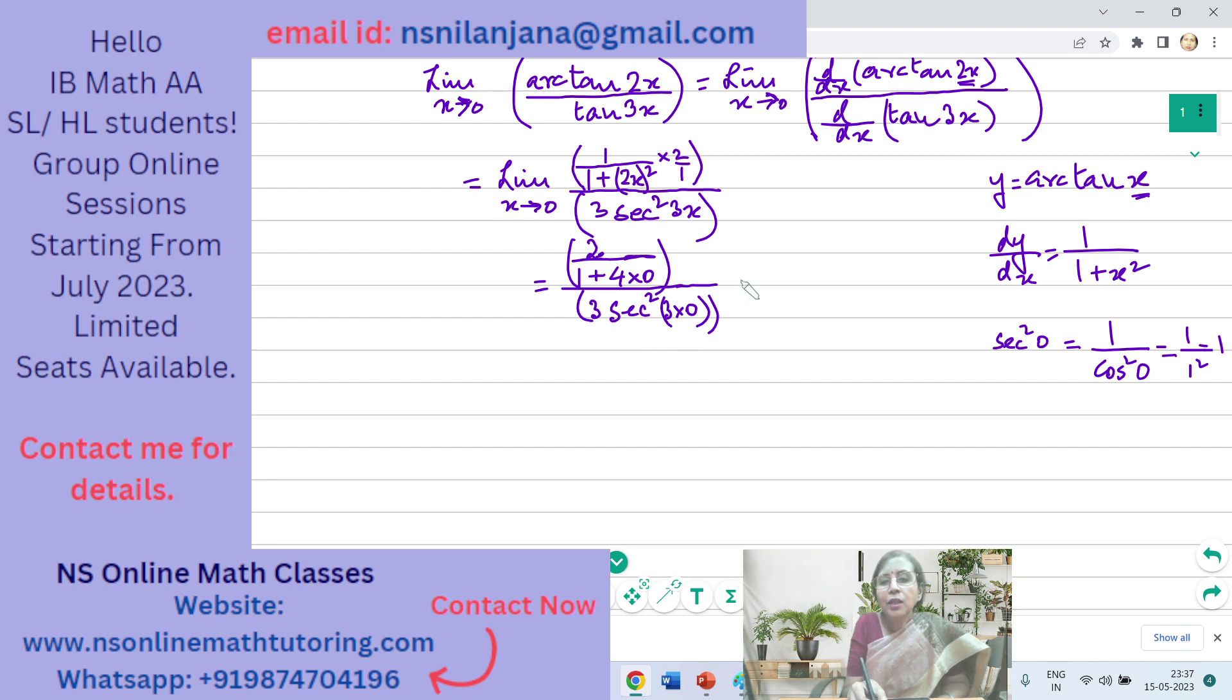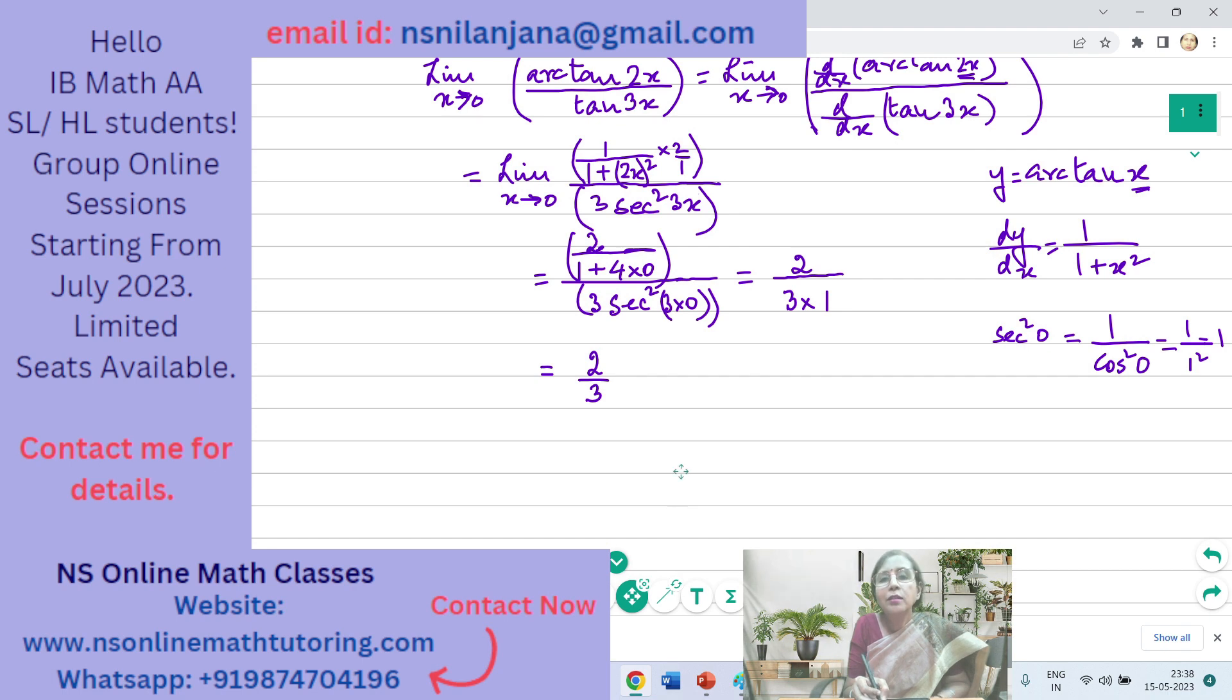So this is equal to, we have got the denominator as, definitely, because 3 times 1 will be 3. Not 1, rather 3 times 1 will be 3. So the denominator is not equal to 0. Therefore, we will not be getting a 0 by 0 case. So the denominator that we have already found will be equal to 3 times 1. What about the numerator? 4 times 0 is 0, 2 over 1 is 2. So we have got the limit value. We don't have to differentiate again.